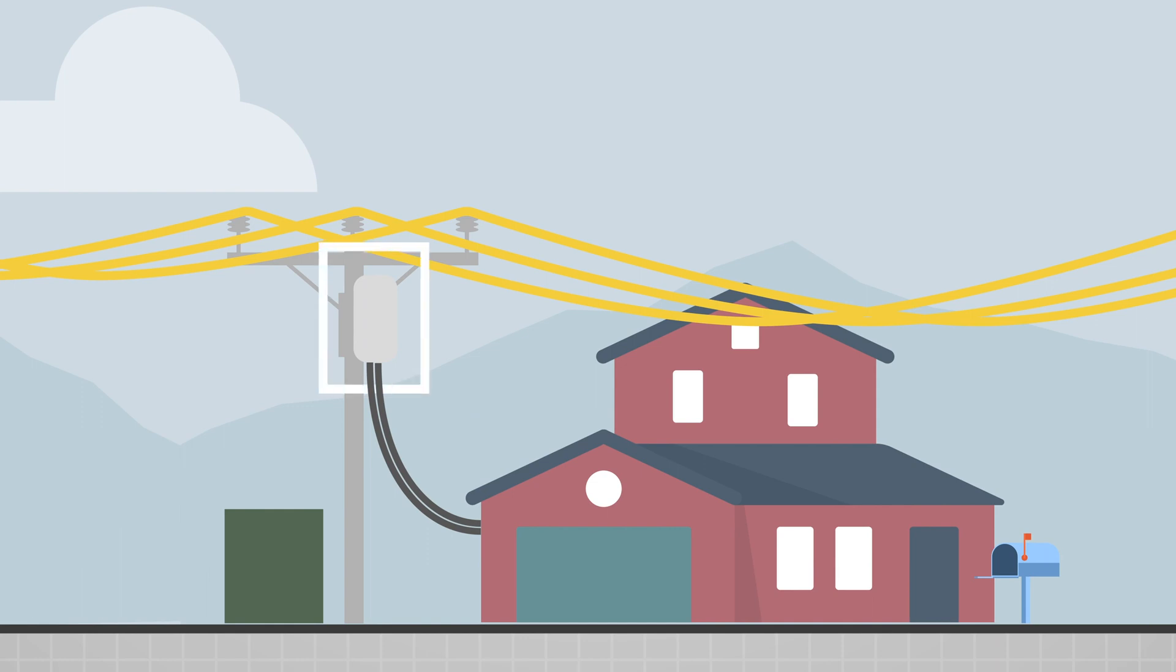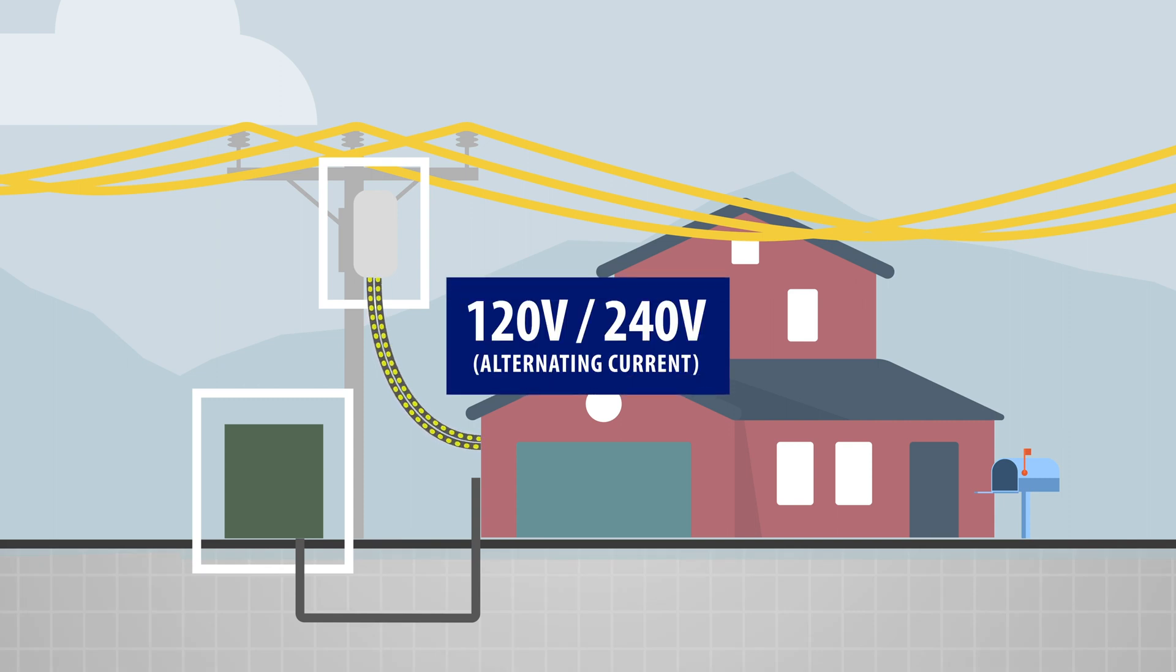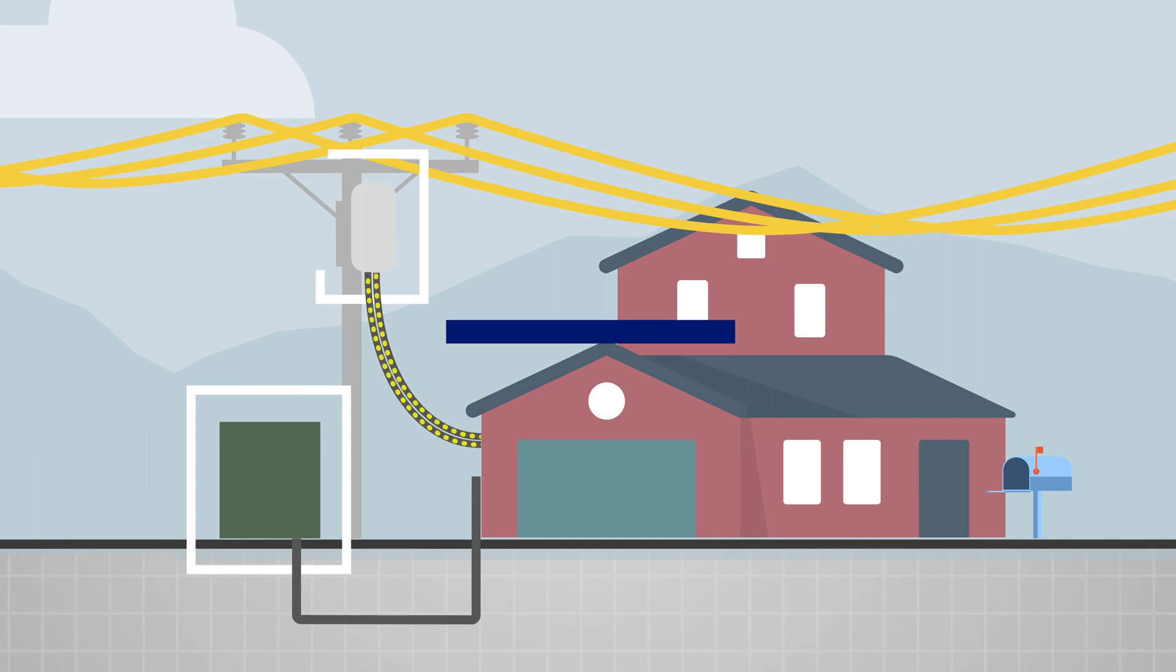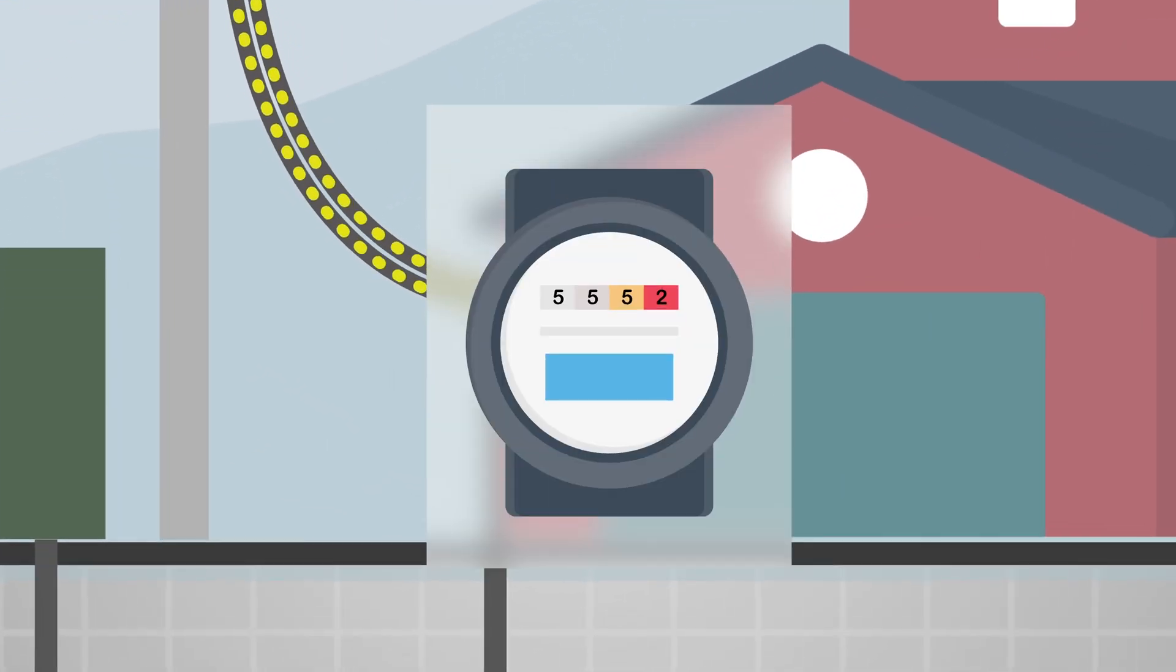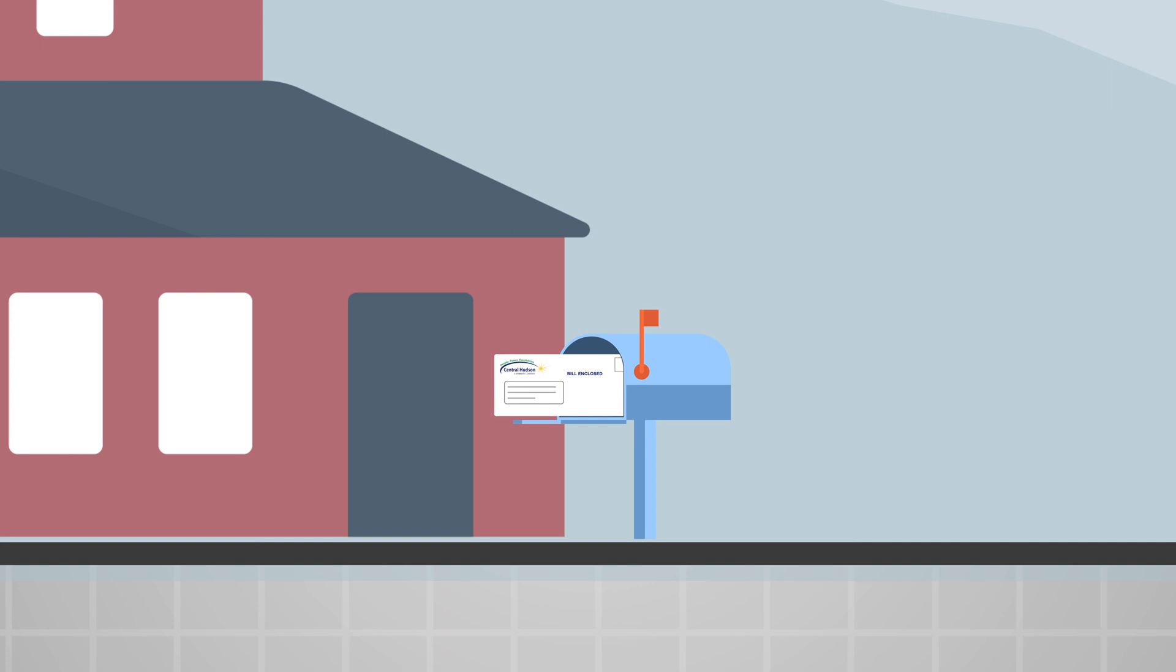Smaller transformers situated on utility poles or in enclosures on the ground step down voltage one more time before the electricity travels through service lines to the customer. Each customer has a watt-hour meter that measures the electrical energy the customer consumes. The meters are read by the company at regular intervals in order to generate the customer's bill.